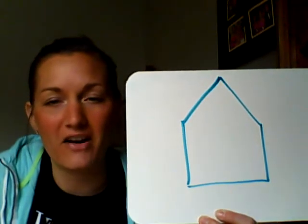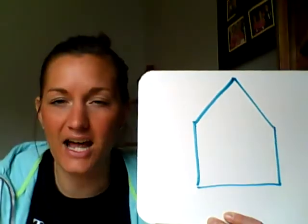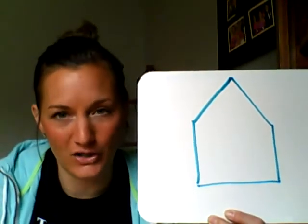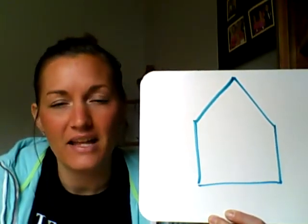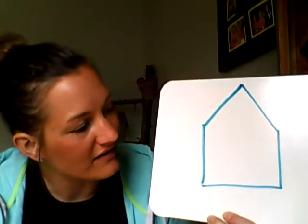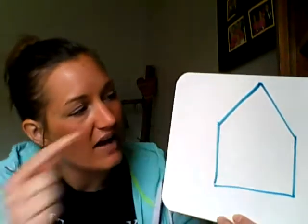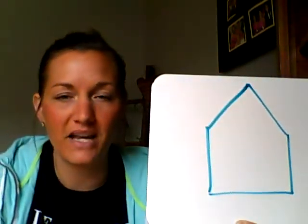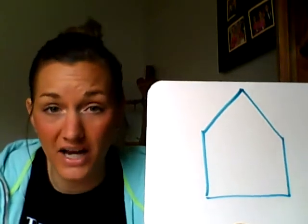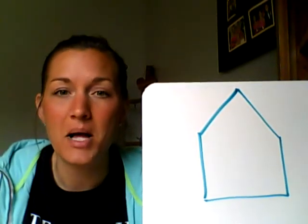A pentagon is a five-sided shape. A lot of us say, oh, a house — it looks like a house. However, it is a pentagon. And pentagon means five sides. So if we count: one, two, three, four, five. It has five sides. Any shape that you draw that has five sides is called a pentagon.